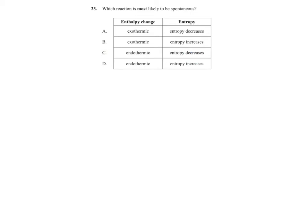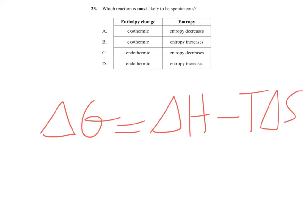Question 23 asks which reaction is most likely to be spontaneous. Using ΔG = ΔH − TΔS, for a spontaneous reaction we want ΔG to be negative. This requires ΔH to be negative (exothermic) and ΔS to be positive (entropy increases). If both conditions are met, ΔG will always be negative. Looking at the options, answer B has a negative ΔH and positive ΔS, so it is the most likely to be spontaneous.